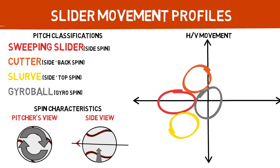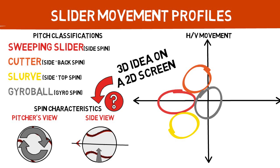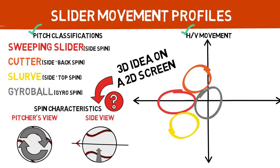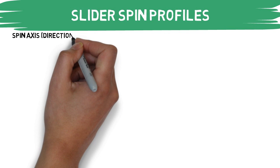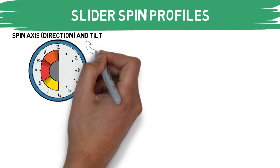Hopefully this helps you gain a better idea of the different movement profiles for sliders. You may have noticed that we strayed away from the tilt clock idea as we went through the different movement profiles, and that is for a reason. There is a significantly large range for each of these pitches — red is your sweeping slider, orange is your cutter, and yellow is your slurve. When you begin to throw gyro spin into the mix, it can fall anywhere along this mark, making tilt a very bad indicator for the type of pitch qualities you're looking for.